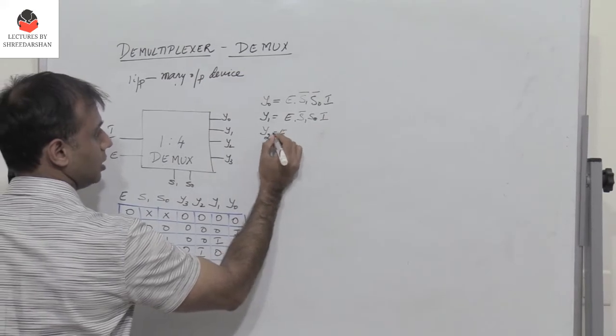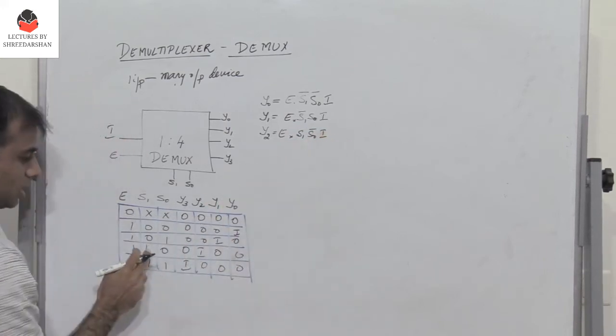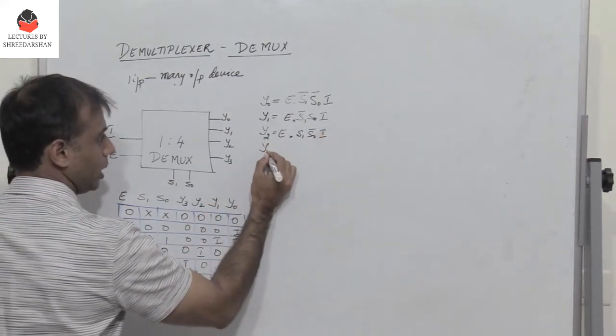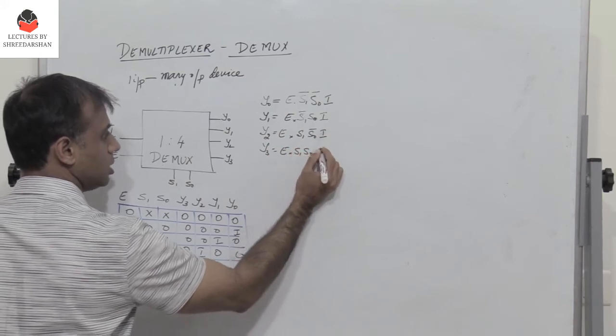And what is y2? Y2 is e into s1, s0 bar, into i, because I have 1, 0 here. And y3 equals enable into s1, s0, into i.